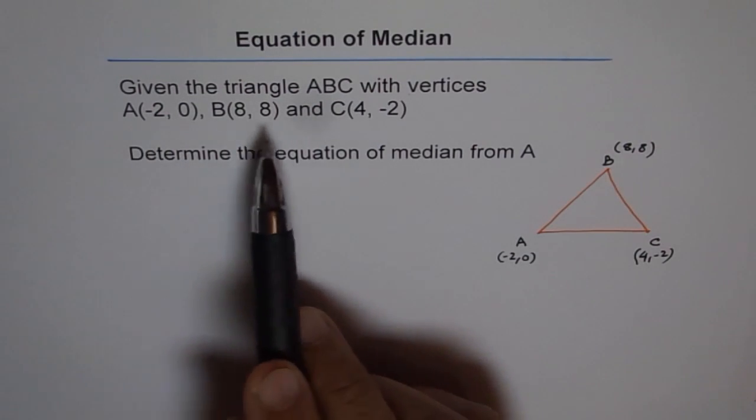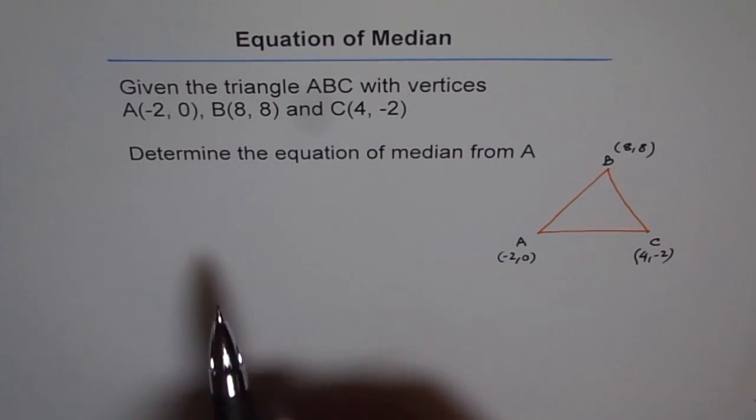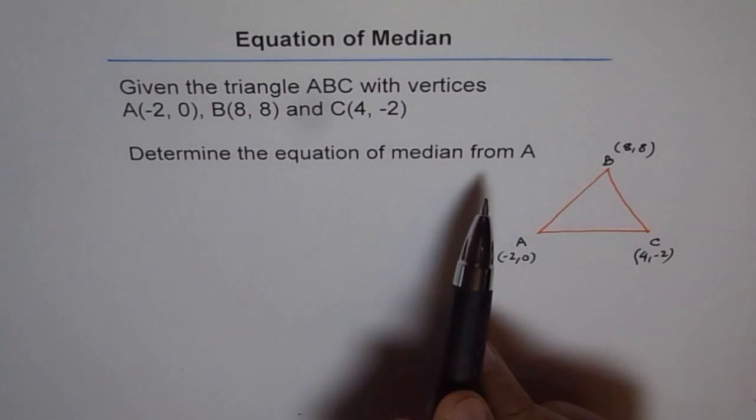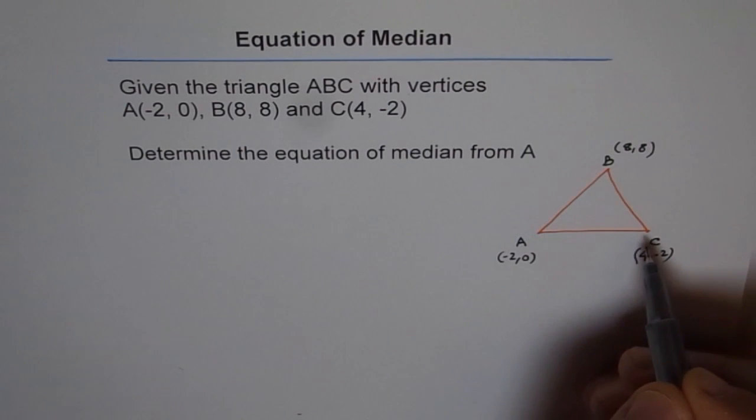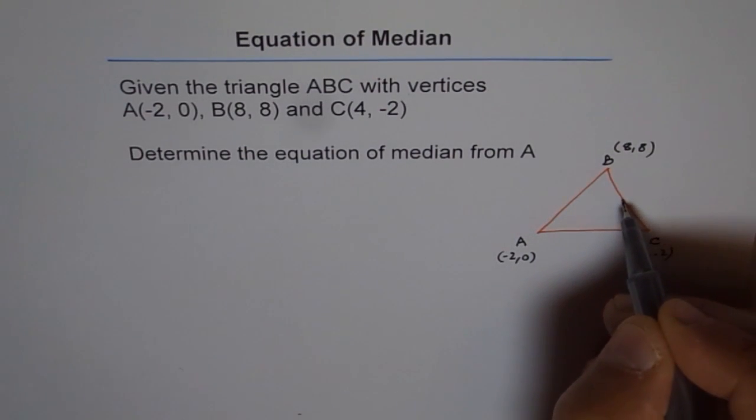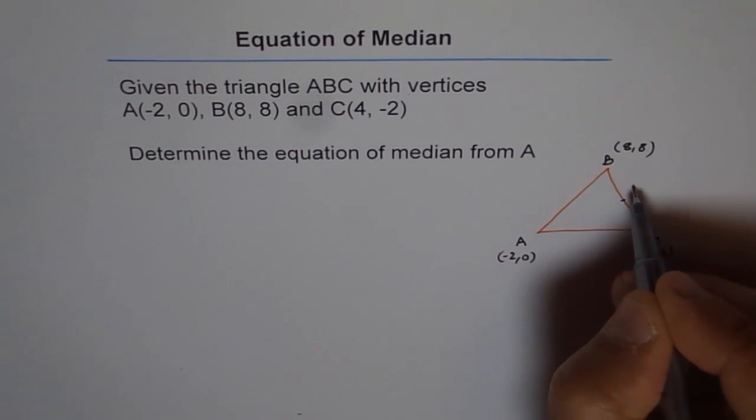Now, so we got the points on our triangle and determined the equation of median from A. So as you know, what is a median? Median is a line that joins the vertex of a triangle to the midpoint of its opposite side. So from A, if I have to draw a median, then I have to find the midpoint. So the midpoint is, let us say this.